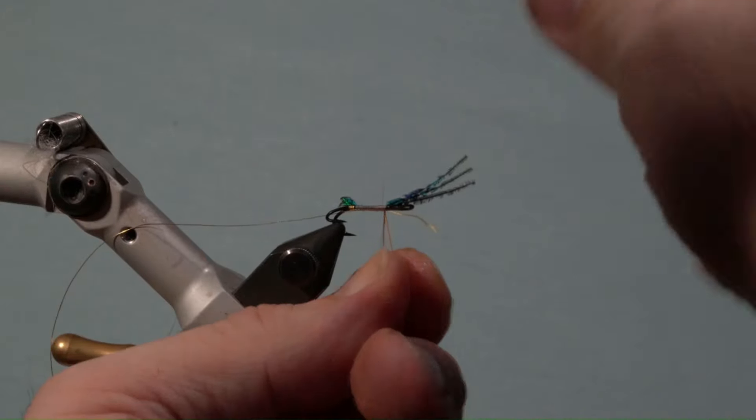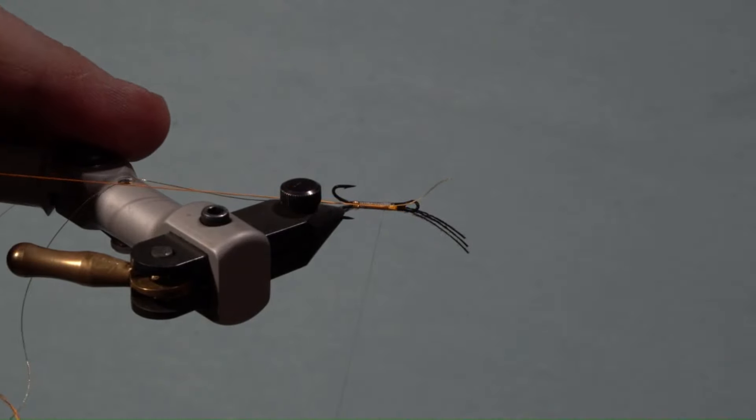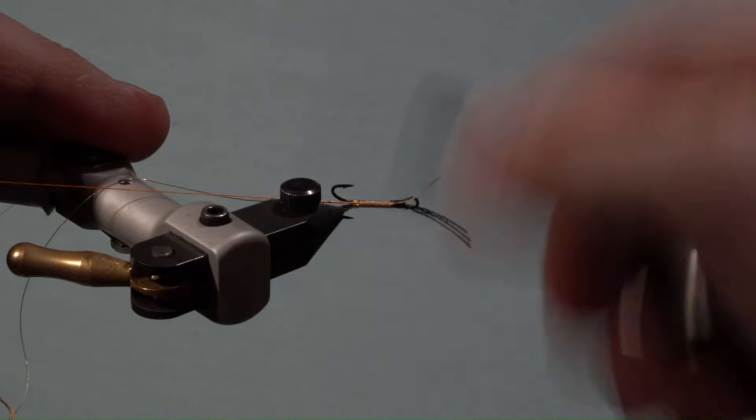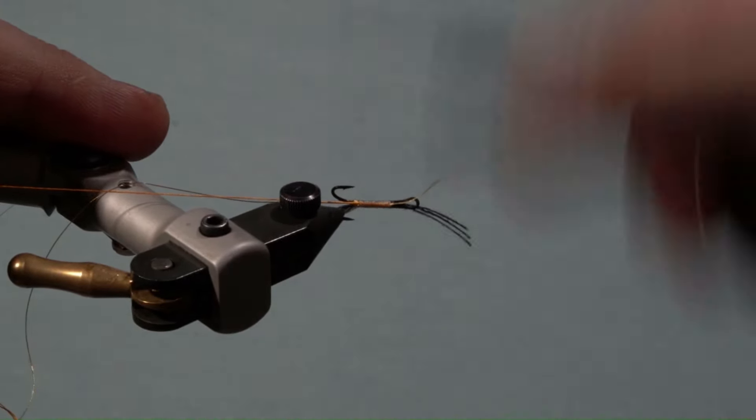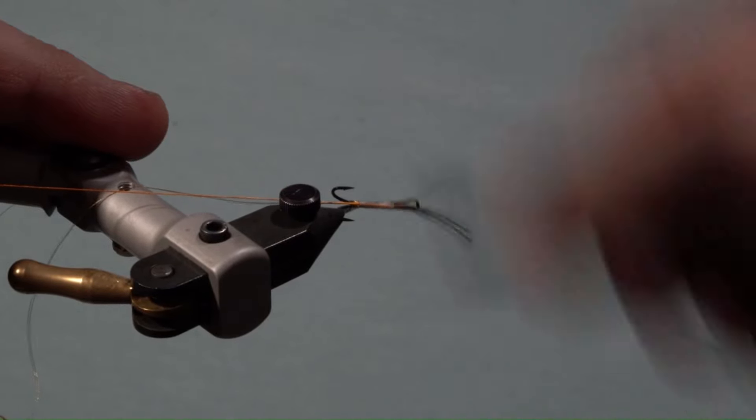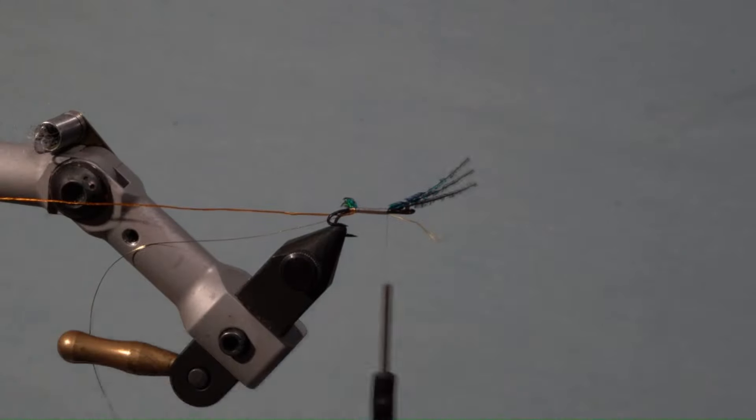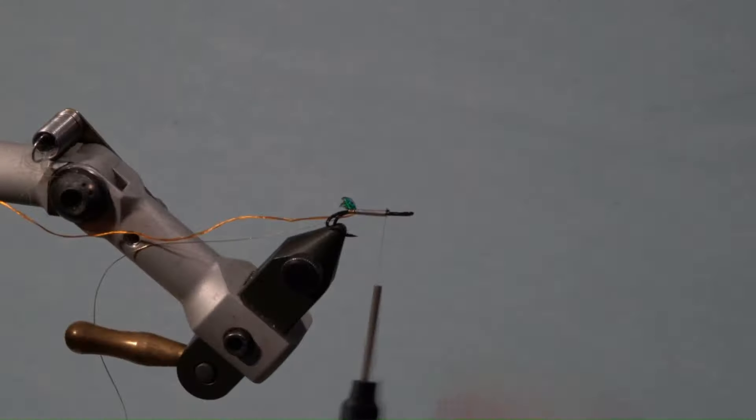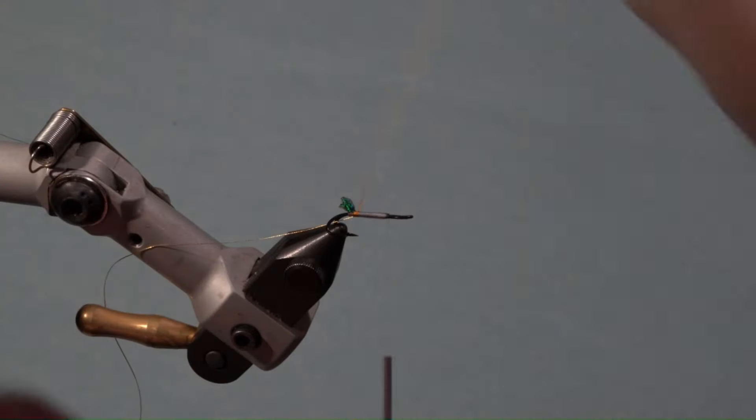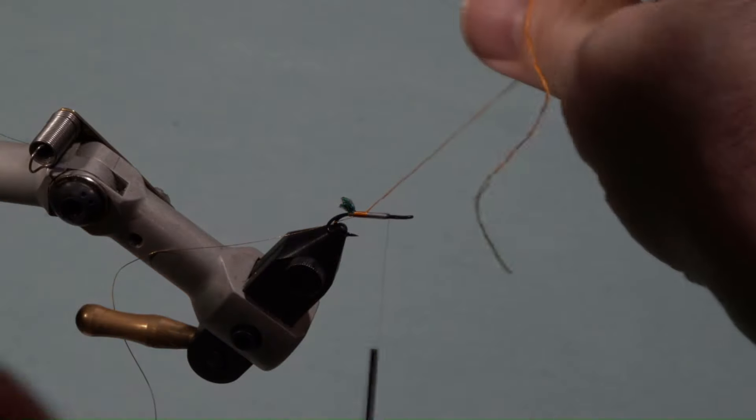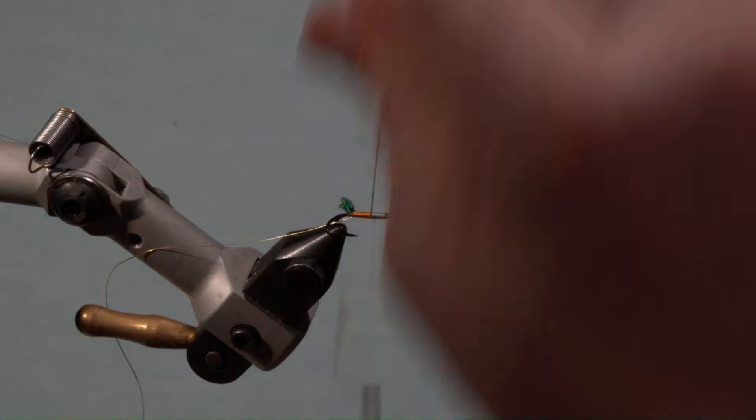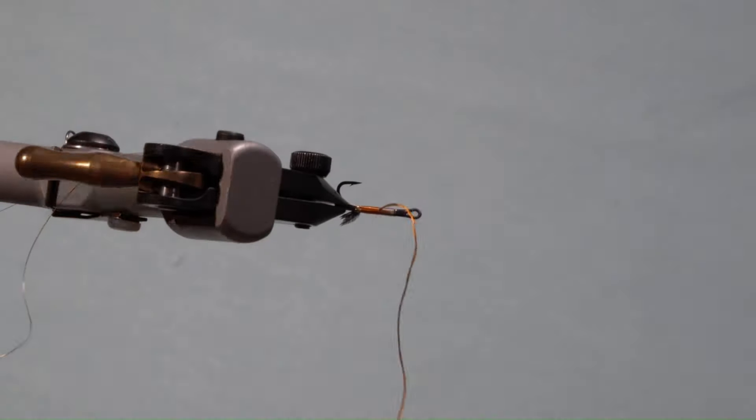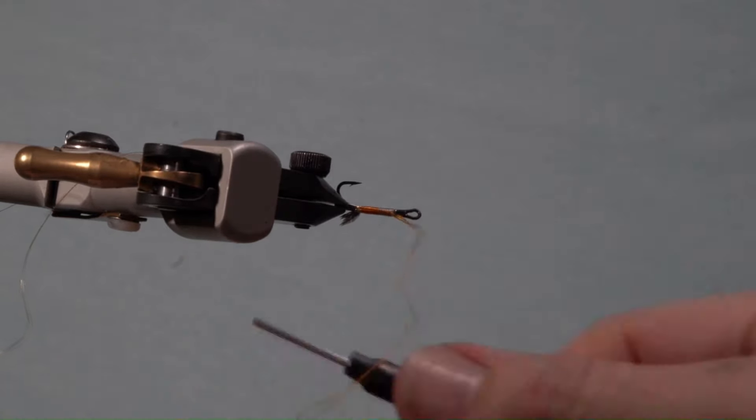Next, take the gold silk floss and secure it underneath the hook with edge-to-edge wraps to the base of the tag and bring the thread forward. Next, wrap the gold silk floss forward, slightly overlapped to the halfway point of the threaded area, and secure it from underneath the hook to the start of the threaded area and trim the excess.